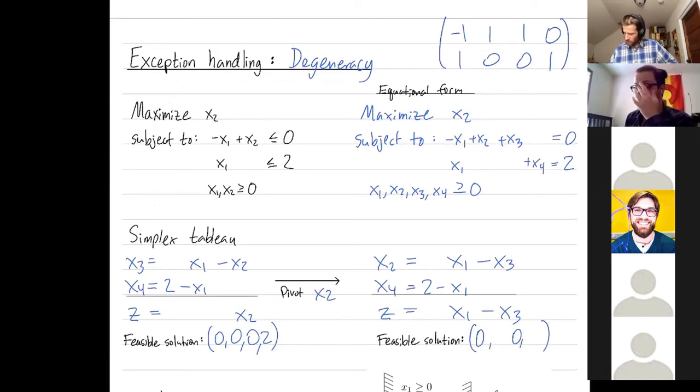x2 is 0 and x4 is 2. So even though I've pivoted, I've changed basis, I haven't moved along the polytope. I haven't increased my optimization function. Okay, let's keep going for a moment.